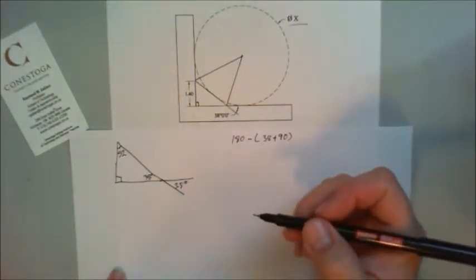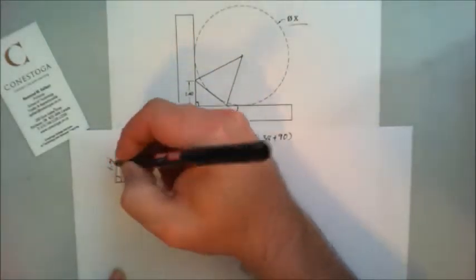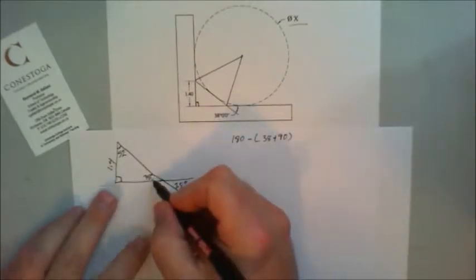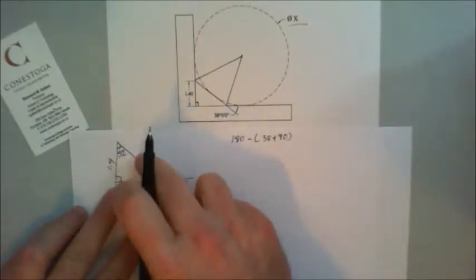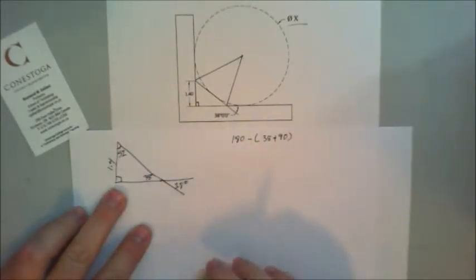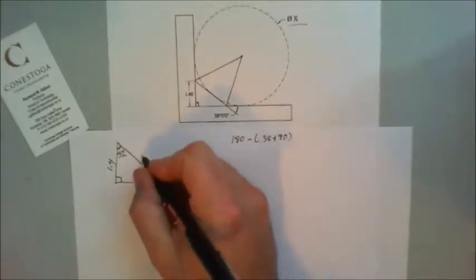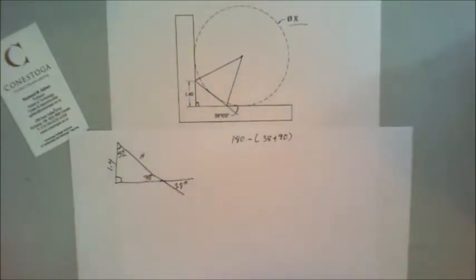We have this height here, 1.4. So we're going to use this guy here. This is opposite hypotenuse. What we want to find is the hypotenuse. We want to find that length of the hypotenuse.